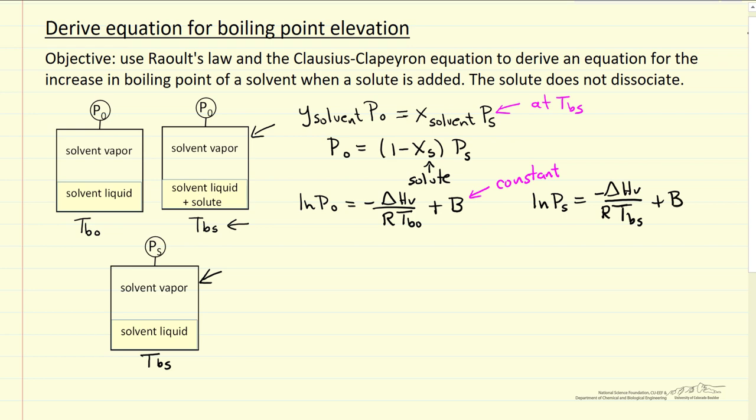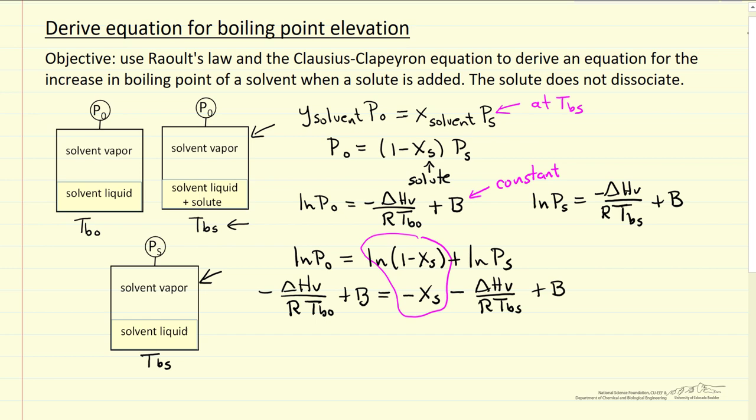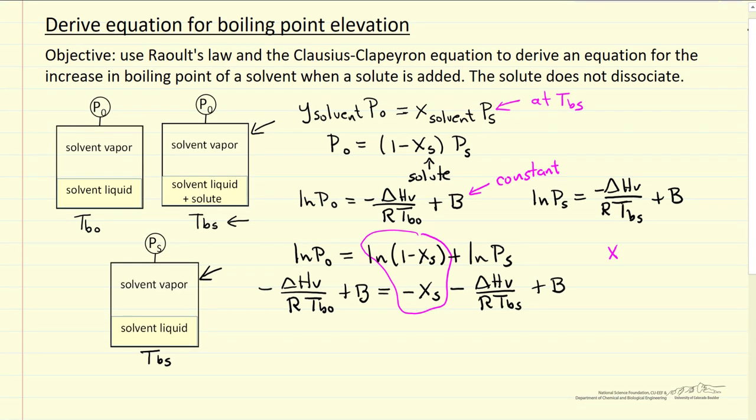So what we're going to do is take the log of the Raoult's law equation, both sides, and then we're going to substitute these two Clausius-Clapeyron equations in. And I've made one other simplification. This is just a mathematical relation that when xs is small, so that's important, this is small.